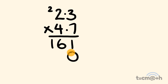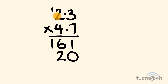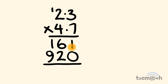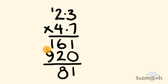Now we put a 0 there and continue to the next line. 3 times 4 is equal to 12 — we put the 2 there and carry the 1. 2 times 4 is equal to 8, plus 1 is equal to 9. Now we're going to add these together: 1 plus 0 is equal to 1, 6 plus 2 is equal to 8, and 1 plus 9 is equal to 10.